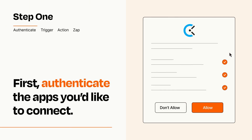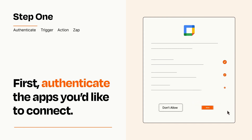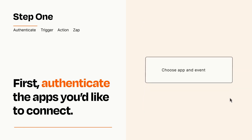To get started, you'll just need to authenticate your apps, which takes just a few seconds. Zapier meets industry standards for encryption when connecting with each of your apps.